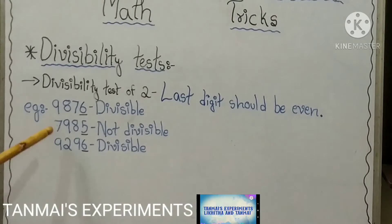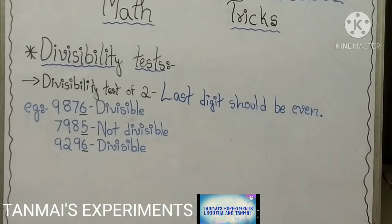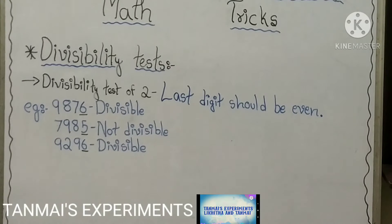In the second example, the last digit is 5 and it is an odd number, so the entire number is not divisible by 2. And in the third example, the last digit is 6 and the entire number is divisible by 2 because 6 is an even number.